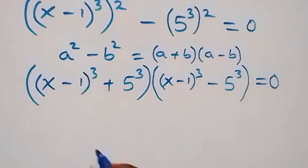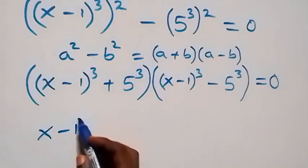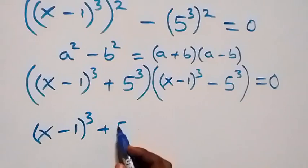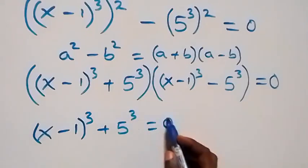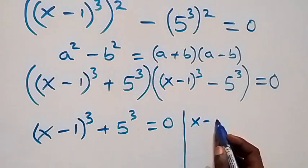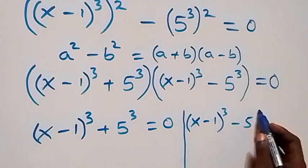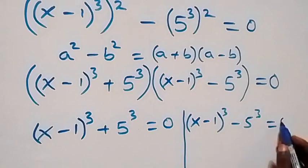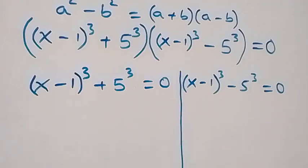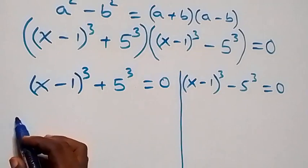Since this product equals 0, we have two cases. The first case is either x minus 1 raised to power 3 plus 5 raised to power 3 equals to 0, or we have x minus 1 raised to power 3 minus 5 raised to power 3 equals to 0.